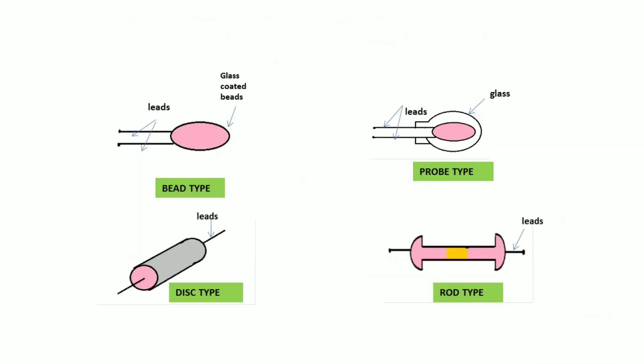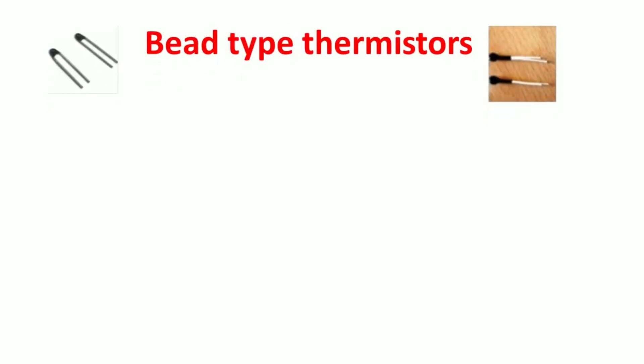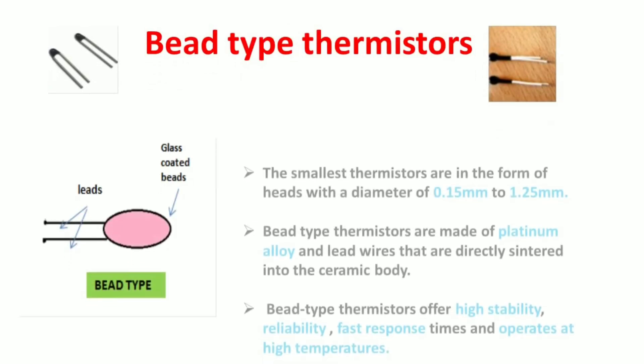On the basis of type of package, thermistors are classified as bead type, probe type, disk type, and rod type. Bead thermistors are smallest type and have beads with diameter 0.5 mm to 1.25 mm. They are made up of platinum alloy and they offer high stability and give fast response.